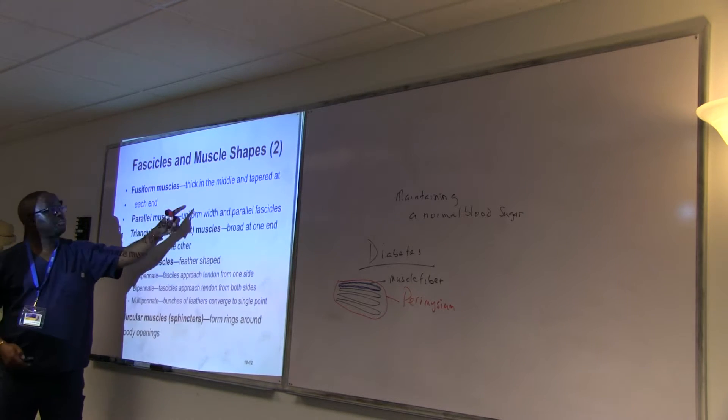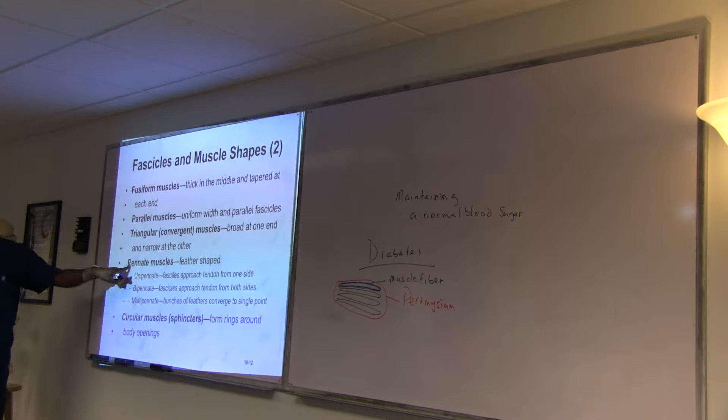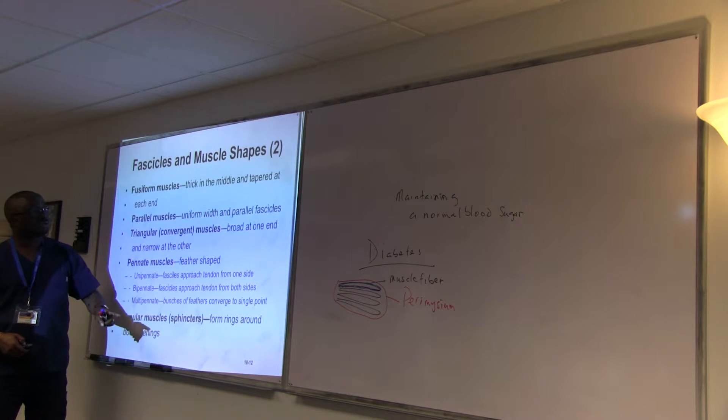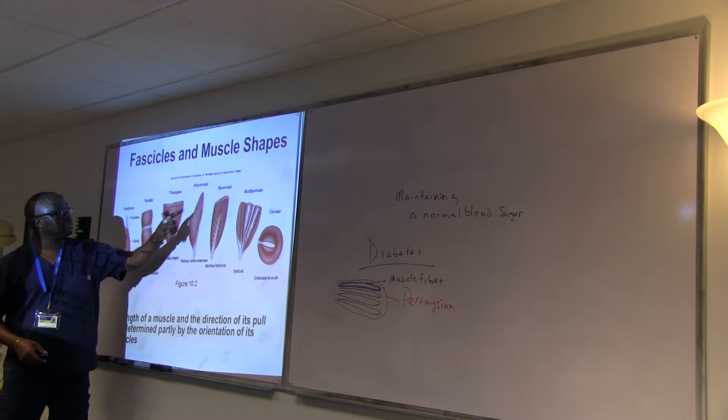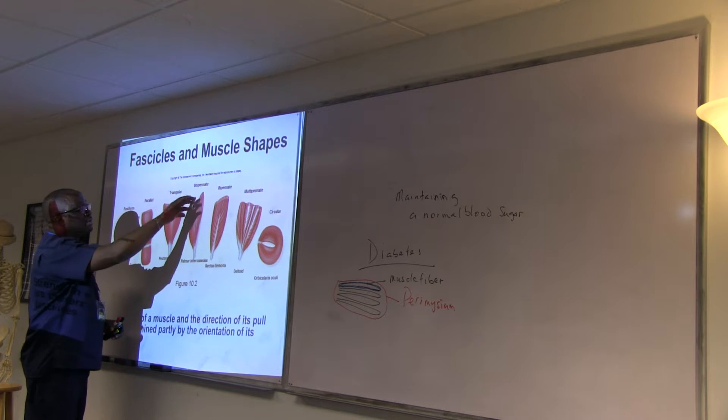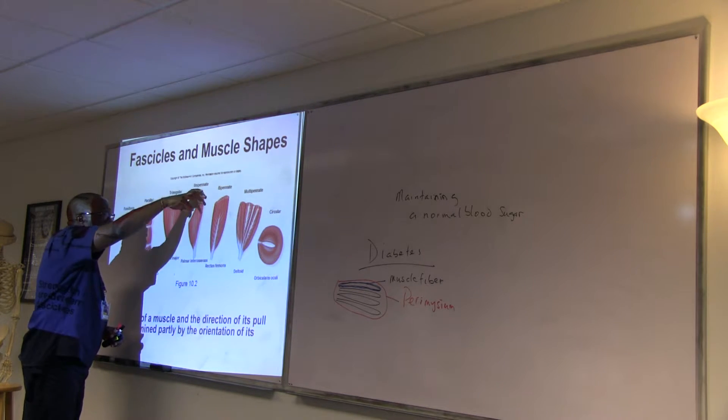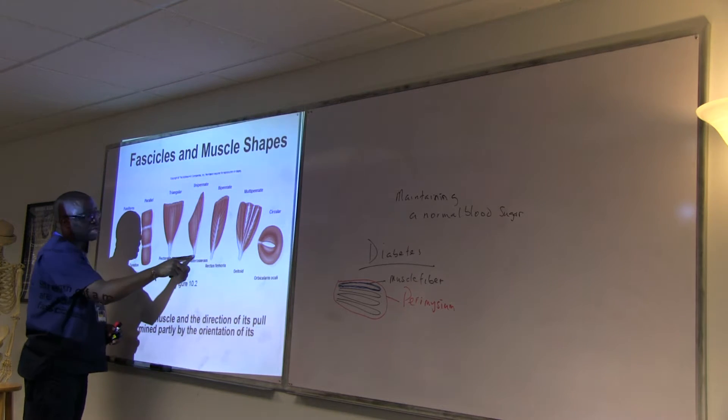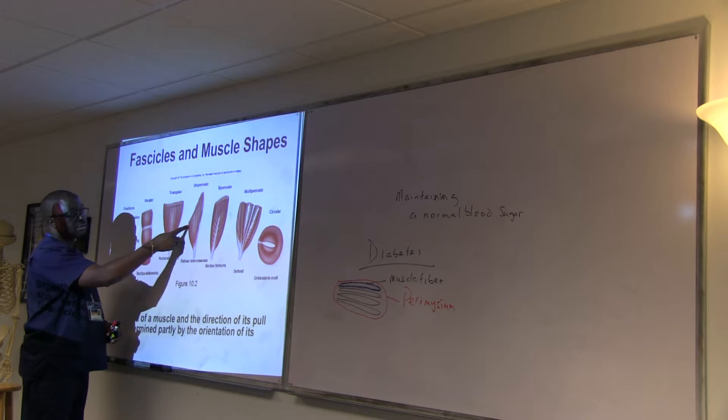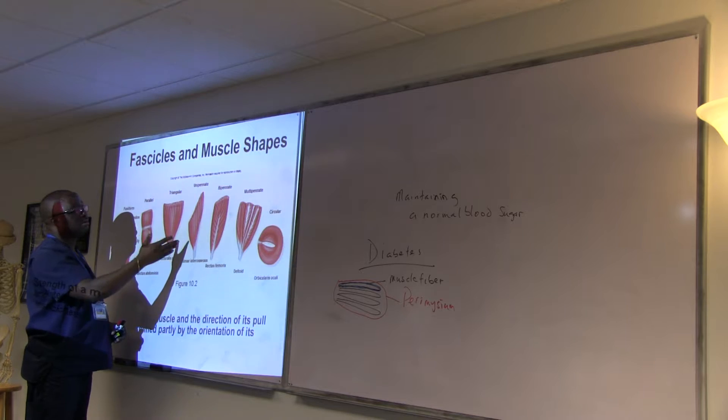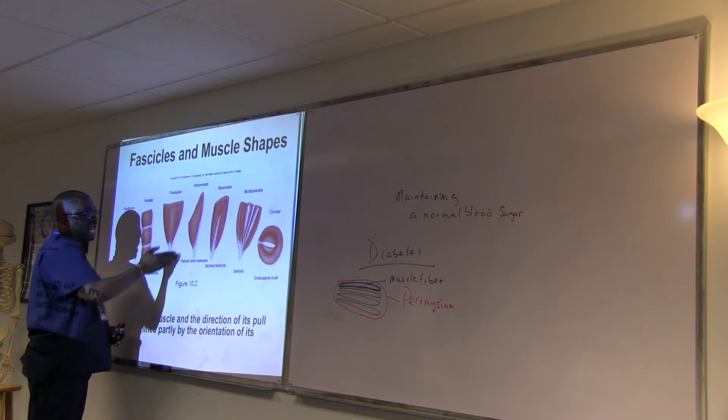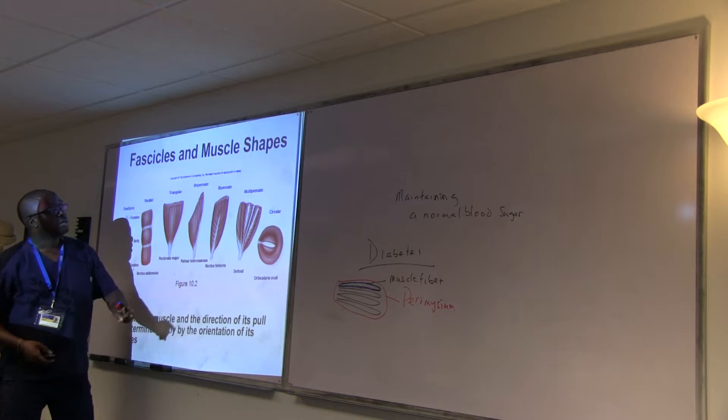The other one is unipennate, or let's call it pennate muscles. Generally, pennate muscles are shaped like a feather. Part of the pennate is unipennate, which means the fascicles, they only have it in one side. So you have the fascicle on one side going, bundled up in one side, then narrows down. Like a feather. It's just like you have a complete feather, then you slice it.